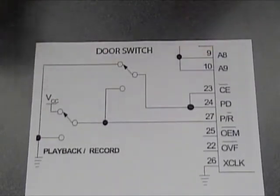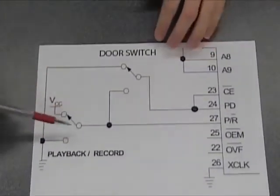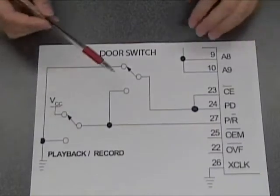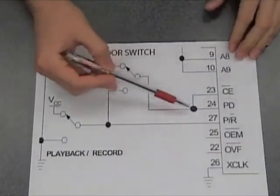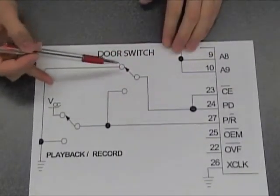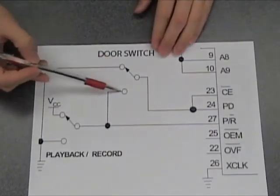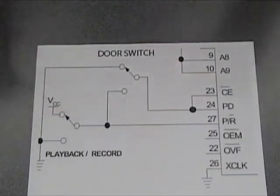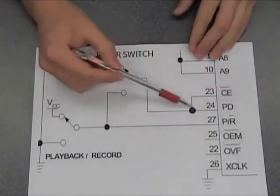In record mode, the playback record switch is low. It forces both of these two pins low, because the door switch acts as low or whatever playback record is. If playback record is low, these two pins are low no matter what.